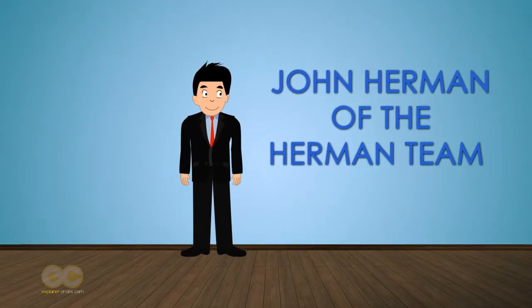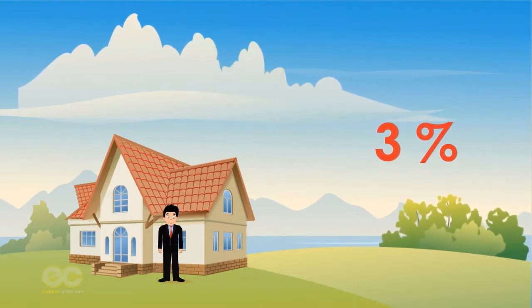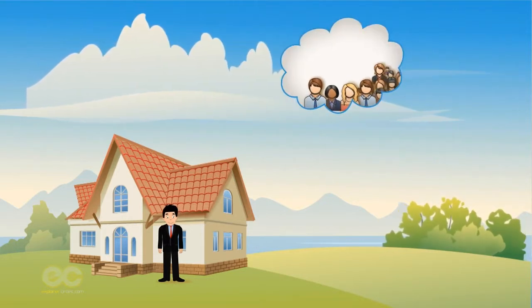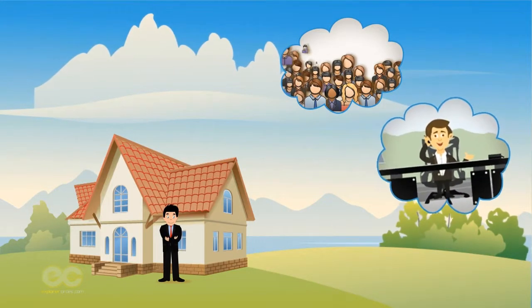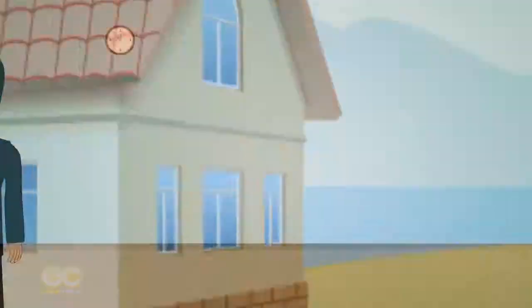For the past three years in a row, John Herman of the Herman Team with Hometown Real Estate has been named an elite top 3% of the 42,000 real estate agents in Illinois. He's accomplished over $15 million in sales this past year using advanced techniques.